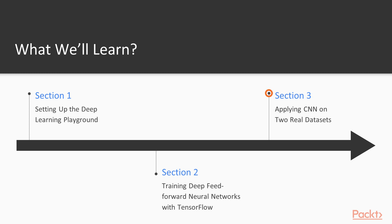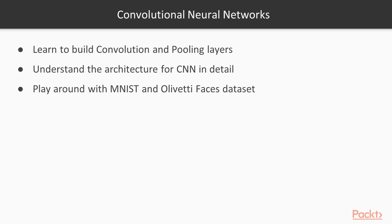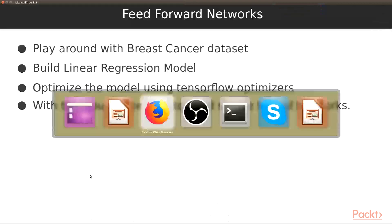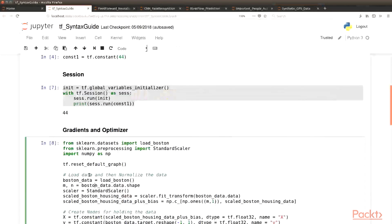Section 3: Applying CNN on two real datasets. Here we learn the basics of CNN — the architecture, convolutional layers, and pooling layers. We play around with the dataset, build the network using convolutional layers, then add a fully connected layer and train the model. That's a really interesting part.